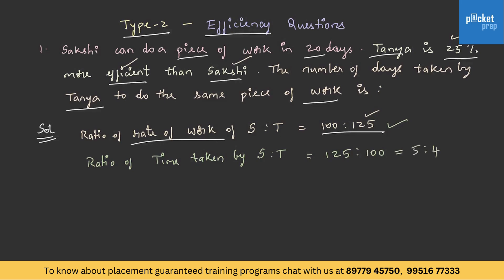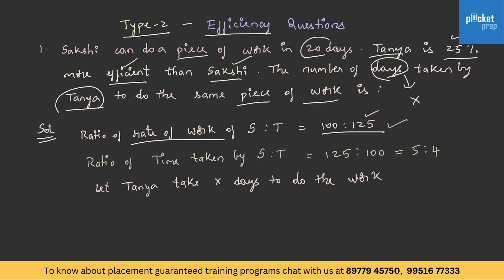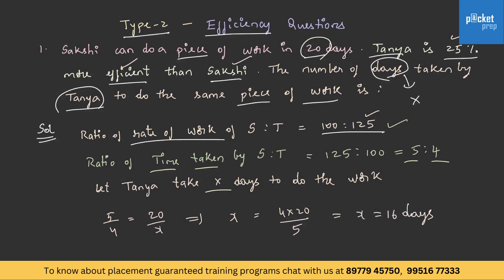Let us see what is asked. The number of days taken by Tanya to do the same piece of work — let us assume this as x. Sakshi takes 20 days and we need to find Tanya's time. Equating the time ratio: 5 by 4 equals 20 by x. This gives x equals 4 into 20 by 5, and on solving, x equals 16 days. So Tanya takes 16 days to complete the same work.